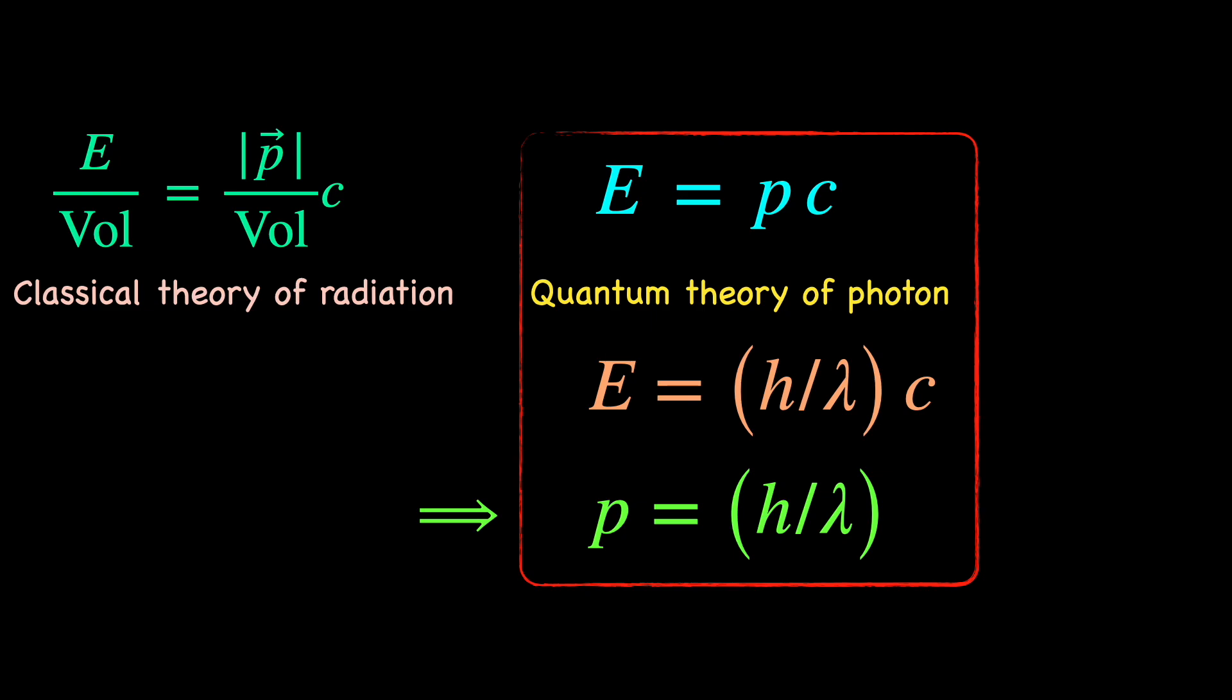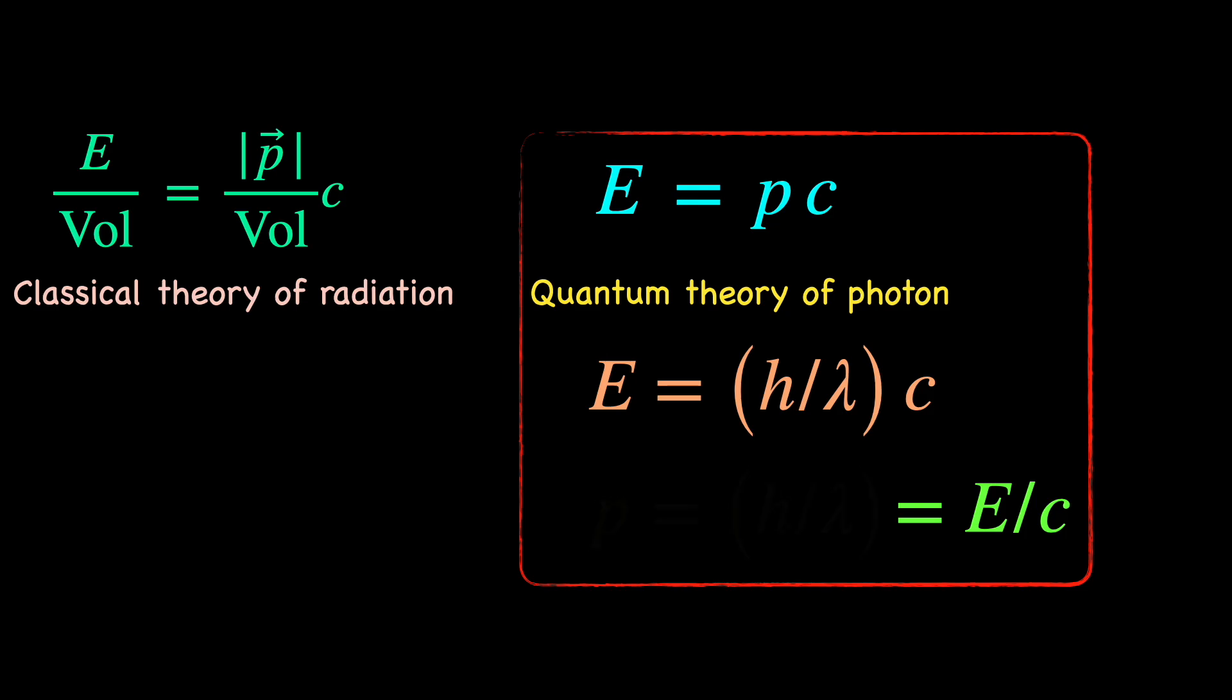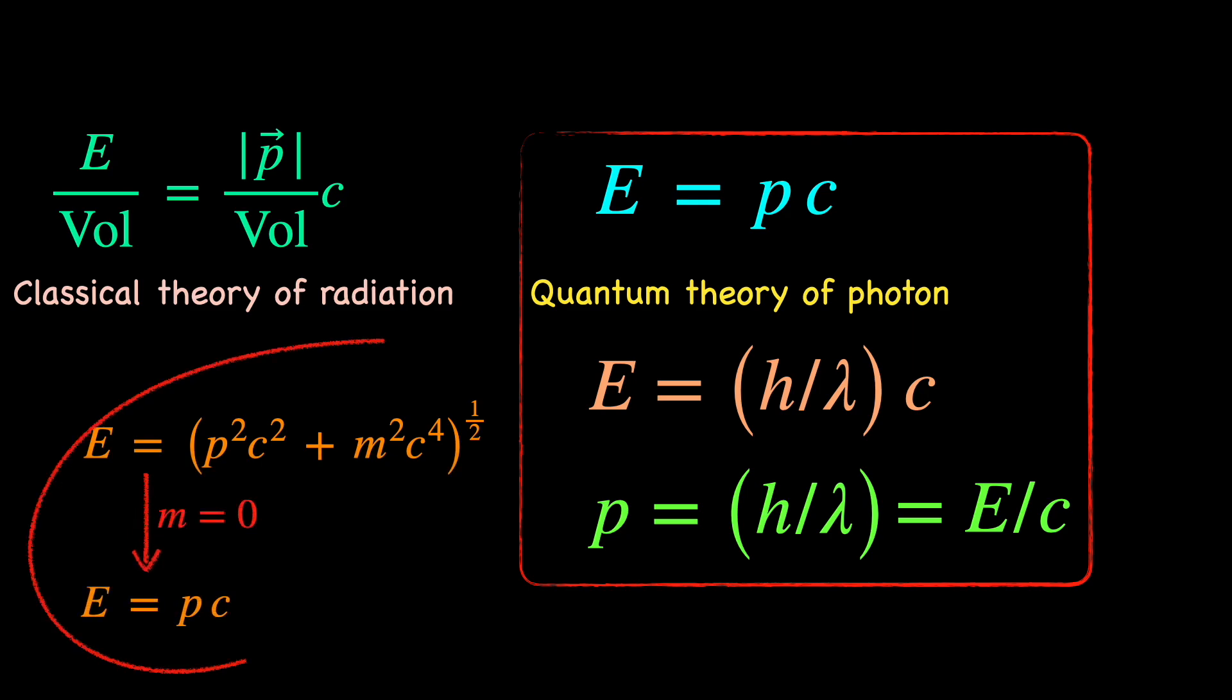So you see how the seed idea of photon momentum being p equals E by c came from the classical radiation theory and its quantum nature is manifested when we express it as Planck's constant upon lambda. Obtaining it from the relativistic massive dispersion relation as is widely practiced is actually a bad move where we just got lucky to arrive at the correct result.